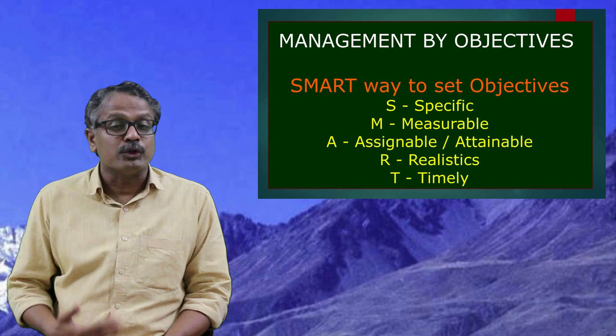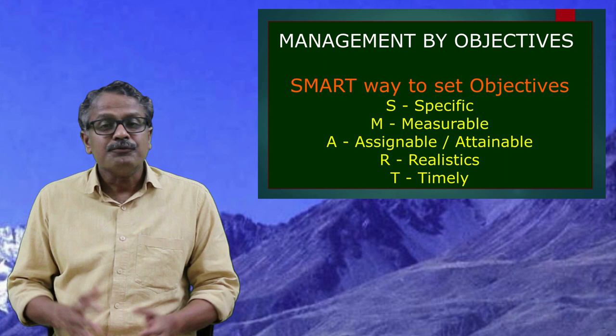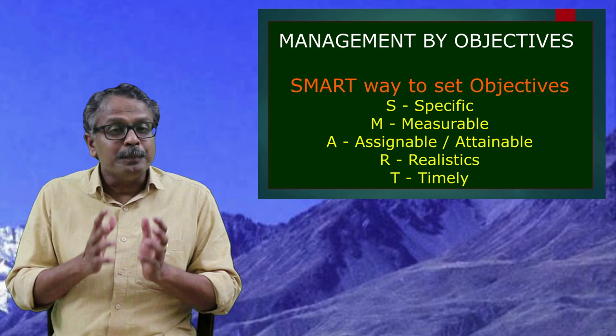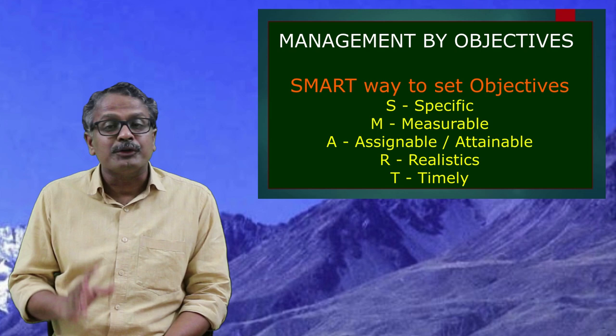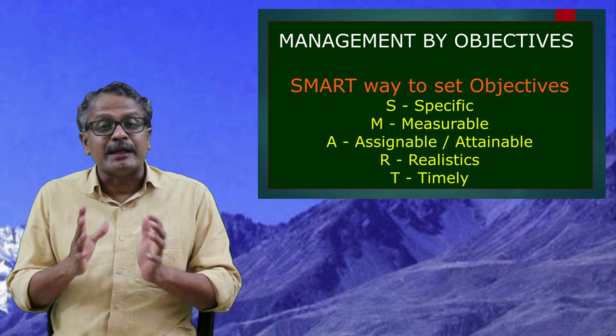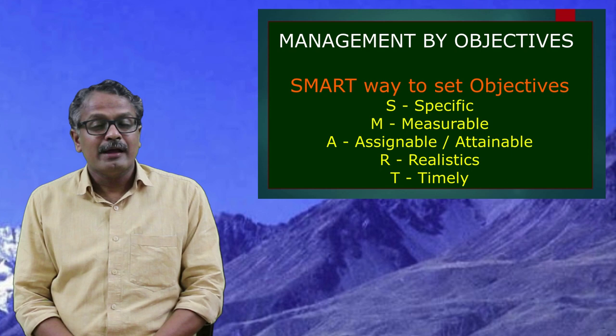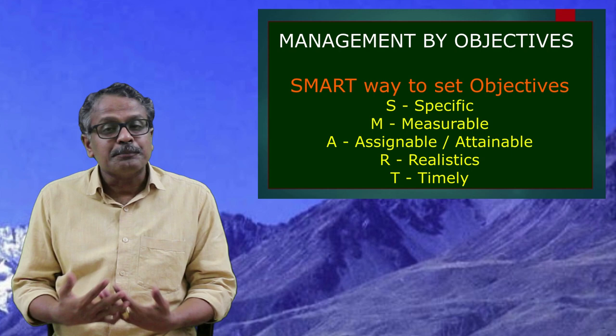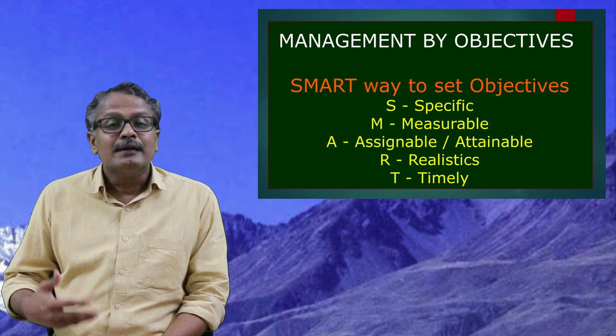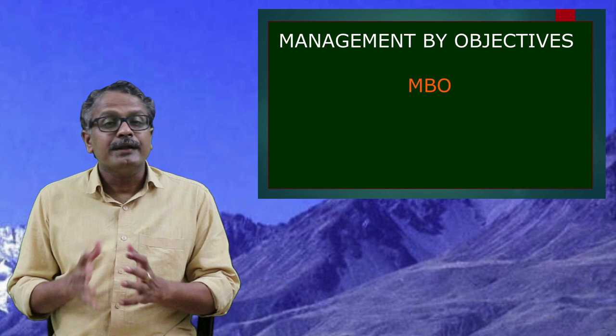R stands for Realistic — vague ideas and dreams cannot be considered good objectives; they should be clear, realistic, and particularly attainable. T stands for Time-limited — objectives and individual targets must be attained on time; undue delay is not ideal, and everything should be done within the time limit. The SMART idea was accepted by the management world with an open mind, making the MBO process more practical and simple.